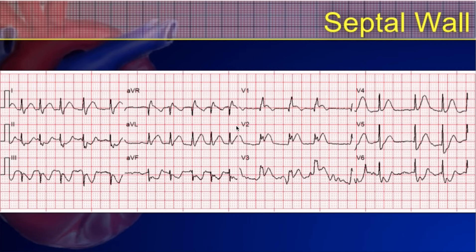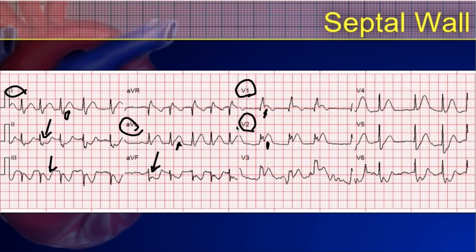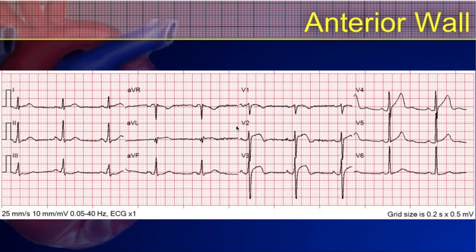Here's an example of a septal wall infarct. The septal leads are V1 and V2, and that's where we see ST segment elevation. Traditionally, V1 and V2 alone wouldn't produce reciprocal changes, but I'm also seeing ST segment depression in leads 2, 3, and AVF. That depression is reciprocal to changes occurring in the high lateral leads, and it's worth noting that 2, 3, and AVF are also reciprocal to the posterior leads — which typically aren't present on a traditional 12-lead EKG.